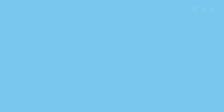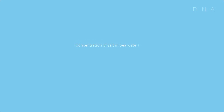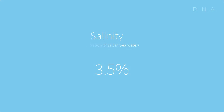The concentration of salt in seawater, which is the salinity, is about 35 parts per thousand on average. In other words, 3.5% of the weight of seawater comes from the dissolved solids.